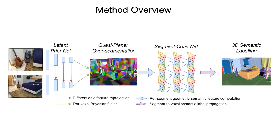Second, quasi-planar over-segmentation groups the surface voxels into segments associated with segment class probabilities and geometric features. Finally, segment convolutional network applies convolutions at segment level and obtains the final refined semantic labels.